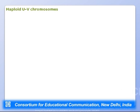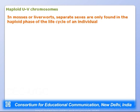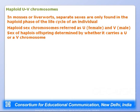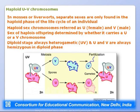Another system is haploid UV chromosome sex determination, found in mosses and liverworts. Separate sexes exist only in the haploid phase of the life cycle. Haploid sex chromosomes are designated U (female) and V (male), and the sex of haploid offspring is determined by whether they carry a U or V chromosome. The diploid stage is always heterozygous (UV), with U and V always hemizygous in the diploid phase.